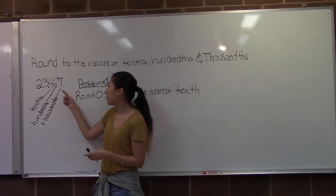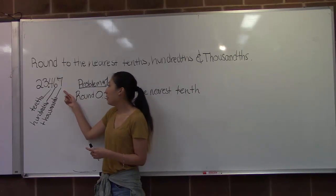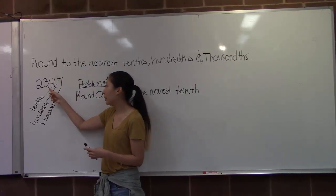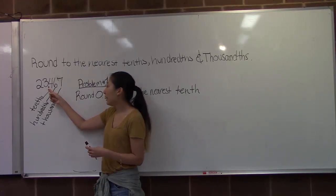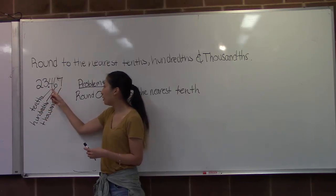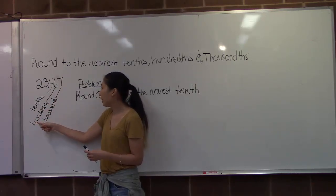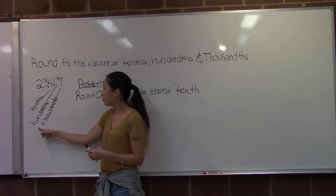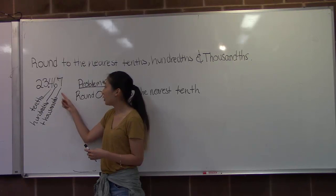I'll use this number as an example. In order to find the tenth place, we'll need to locate the decimal point. On the right of the decimal point will be the tenth place, which is a 4. On the right of the tenth place will be the hundredths place, which is a 6. On the right of the hundredths place will be the thousandths place, which is a 7.